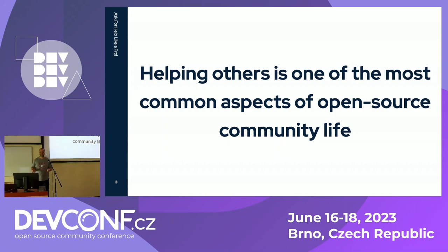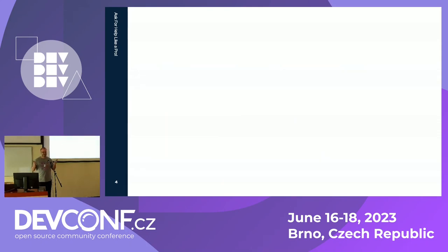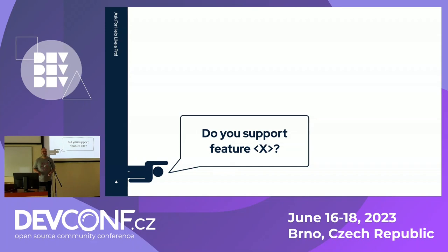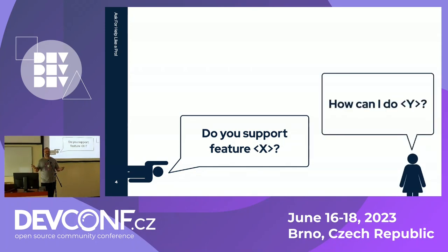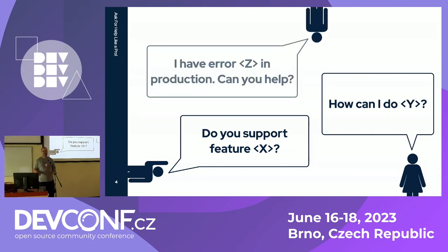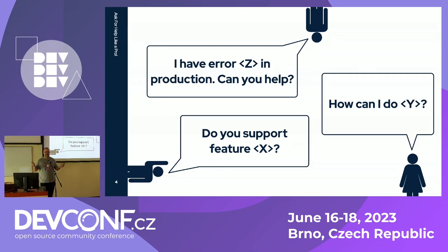Helping others is one of the most common parts of open source community life. It's quite normal that people come and ask whether some feature is supported, how to use a feature, how to implement something, or how to architect something. And of course many people who already run the project in production suddenly run into issues they don't know how to solve, and they come screaming 'help, my production is down.' These are just some examples of how people ask for help in the different communities we work in.